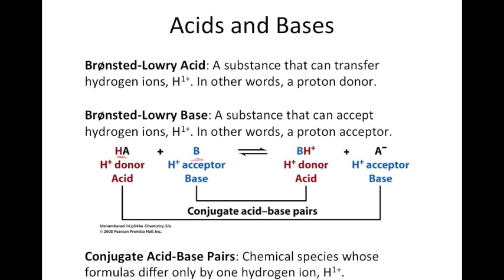So if our acid HA loses a proton we would end up with A⁻, and our base which has accepted a proton becomes BH⁺. Since the base accepted an H⁺ ion the charge is plus, and since HA lost a proton this would be A⁻. When a Bronsted-Lowry acid loses a proton it forms what is called a conjugate base, and when the Bronsted-Lowry base accepts a proton it forms what is called a conjugate acid.